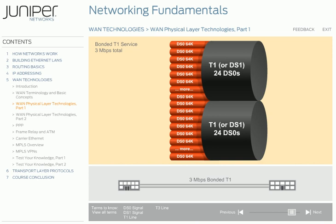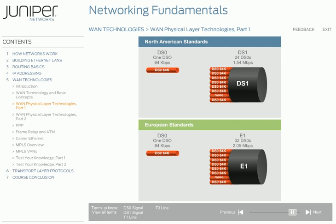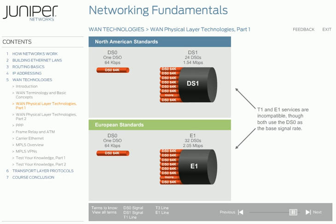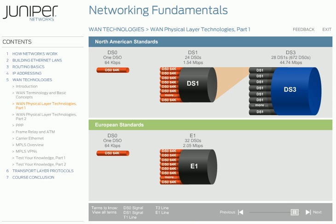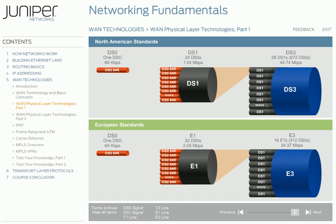Many businesses use T1s to connect to other locations or the Internet. In most other places in the world, customers use E1 services, where the E stands for European, in place of T carrier services. T1 and E1 services are incompatible, though both use the DS0 as the base signal rate. An E1 differs slightly from a T1 in that its data rate is 2.05 megabits per second and is comprised of 32 DS0s instead of 24. An E3 bundles 16 E1s, or 512 DS0s, and has a data rate of 34.37 megabits per second.